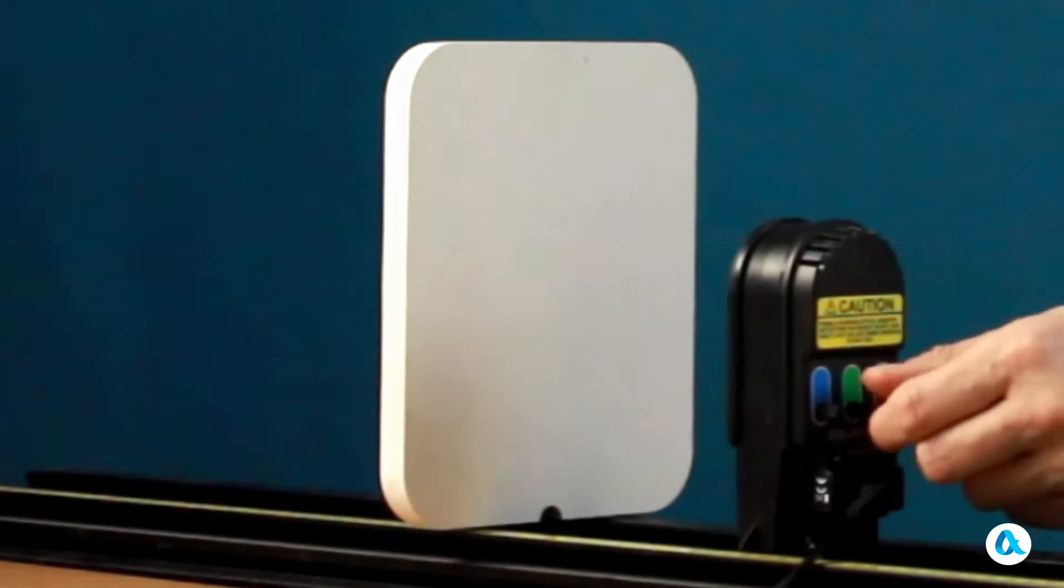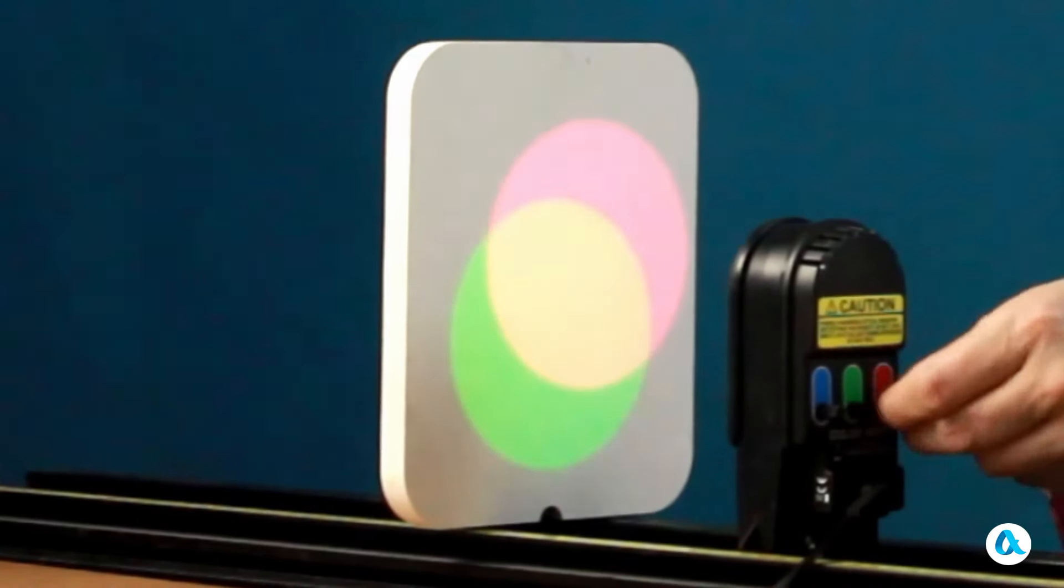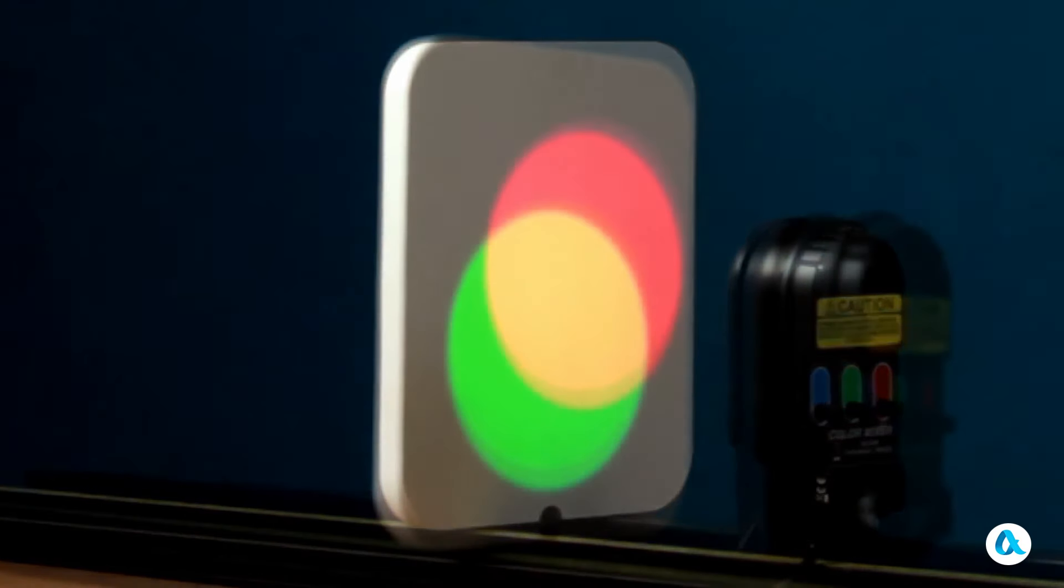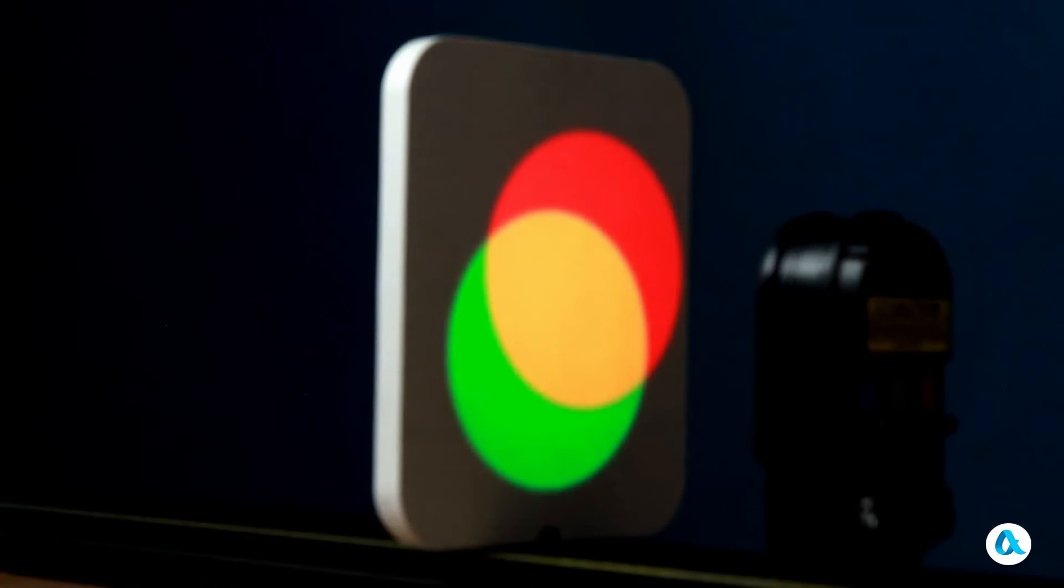And now, I will proceed to activate two of them, namely the green one and the red one. And we see that where the beams of light overlap, a yellow color is produced. Although there is no spectral yellow present in this situation, our brain is able to perceive the combination of spectral green and spectral red as the color yellow.